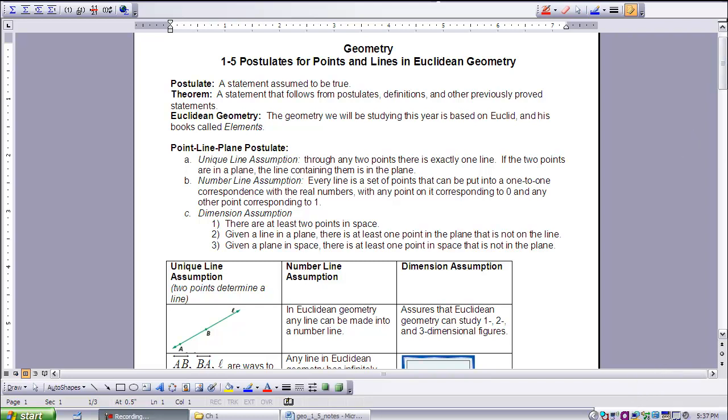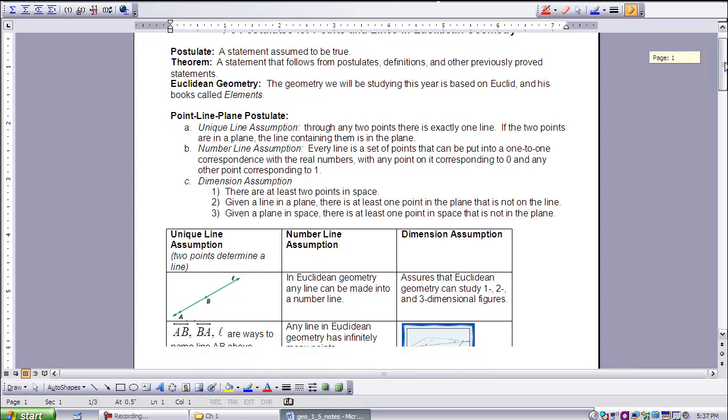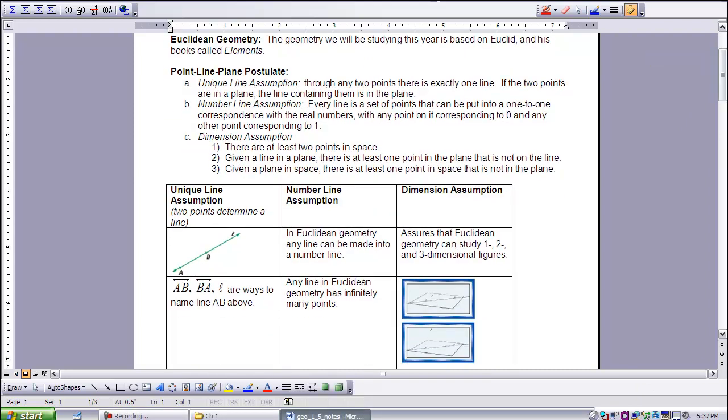The point-line-plane postulate is broken down into three parts in this lesson. The first part is part A, called the unique line assumption. Through any two points, there is exactly one line. If the two points are in a plane, the line containing them is in the plane.